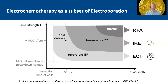Electrochemotherapy is a subset of electroporation, as shown here by the graph in the reversible electroporation zone. This is ideal for drug delivery as short microsecond pulses can be applied over a field strength to break down the transmembrane voltage temporarily and allow exchange of materials, such as drugs or DNA.